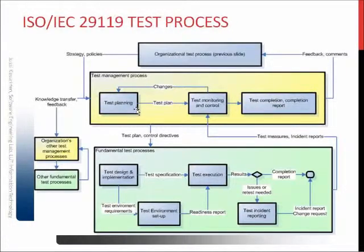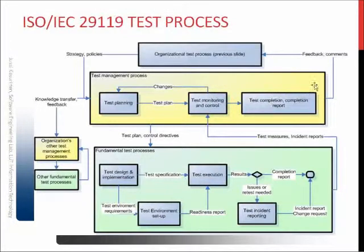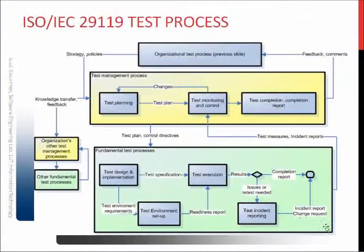The yellow box represents the test management in one project, meaning it includes test plan creation, planning testing, doing monitoring and control, and test completion on the finished project — this is the project manager level of administrative work. The project manager is required to apply the strategy and policies in their own test plan, which is then realized by the fundamental test process, which includes test environment setup, test execution, and test design and implementation.